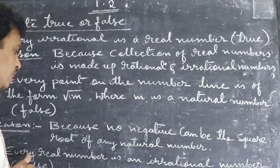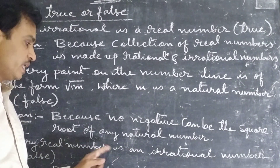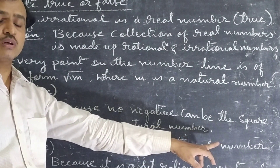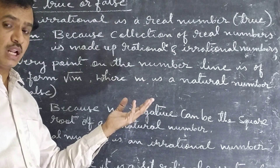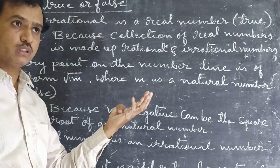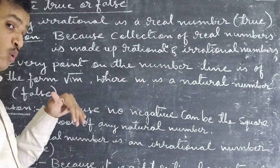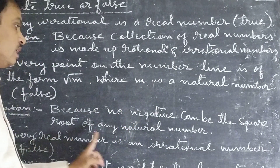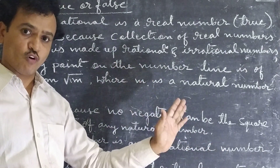Question number 3: Every real number is an irrational number. Real numbers are nothing but all rational numbers as well as irrational numbers. But the question here is: every real number is an irrational number. So that is false.